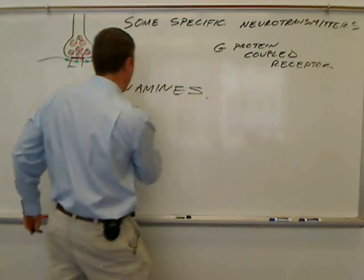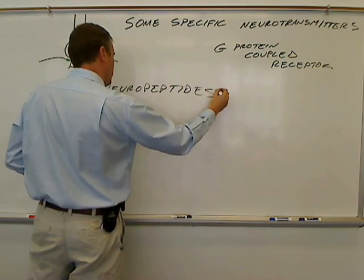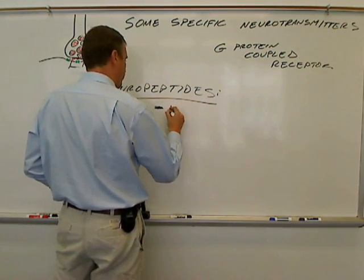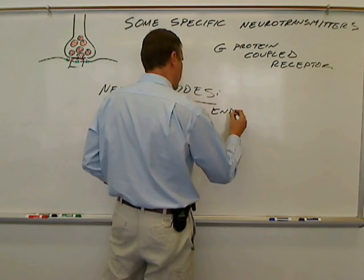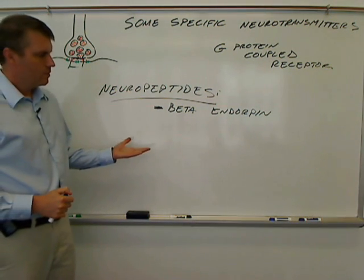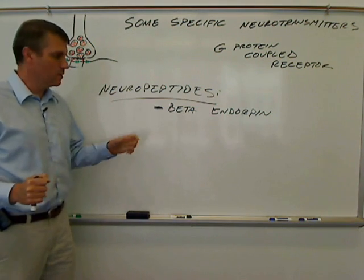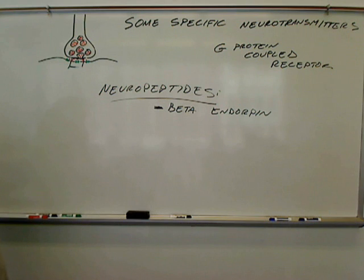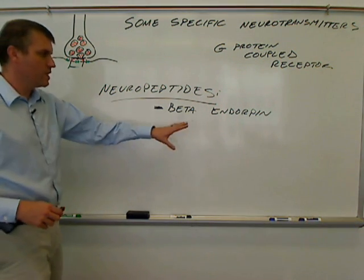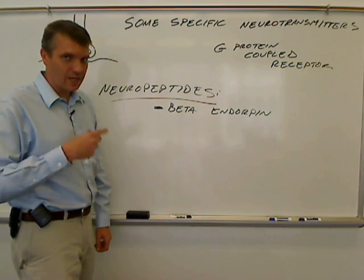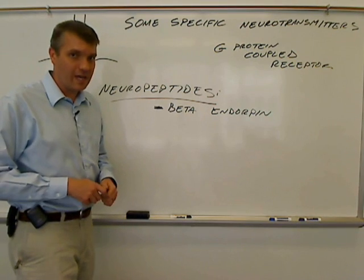The next category are neuropeptides. The only one I have my students know is beta-endorphin. Beta-endorphin may be one of the major reasons that somebody who runs feels good while running — those good feelings that come from exercise. It also suppresses pain; it's a pain suppressor. You could imagine taking a drug that would help increase endorphin levels to help with chronic pain or conditions like fibromyalgia.